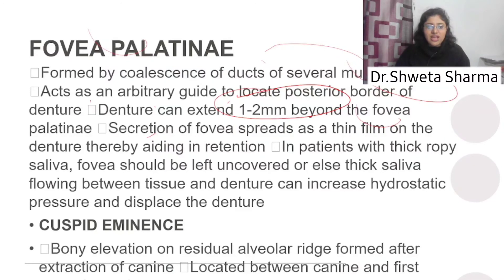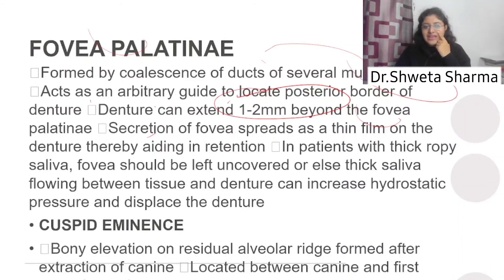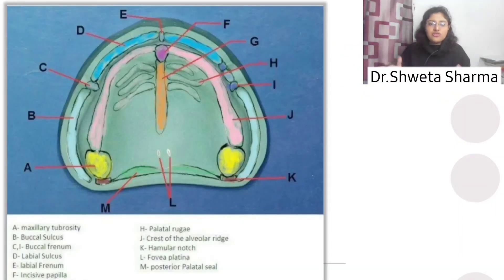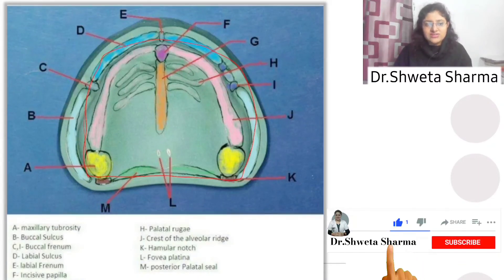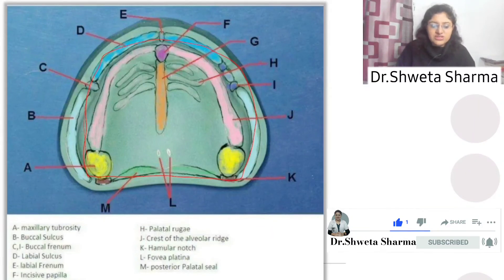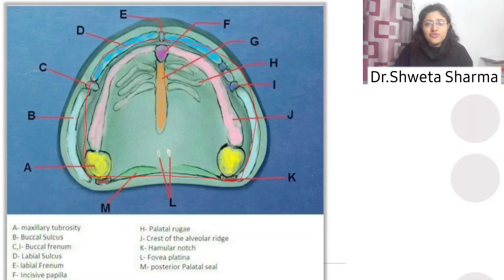The cuspid eminence is a bony elevation on the residual ridge. When the canine is extracted, the remaining bony elevation is called the cuspid eminence, which is located between the canine and first premolar region. So this covers today's video. You should remember the outline: limiting structures, four supporting structures, and four relief areas. I hope this video lecture is helpful.